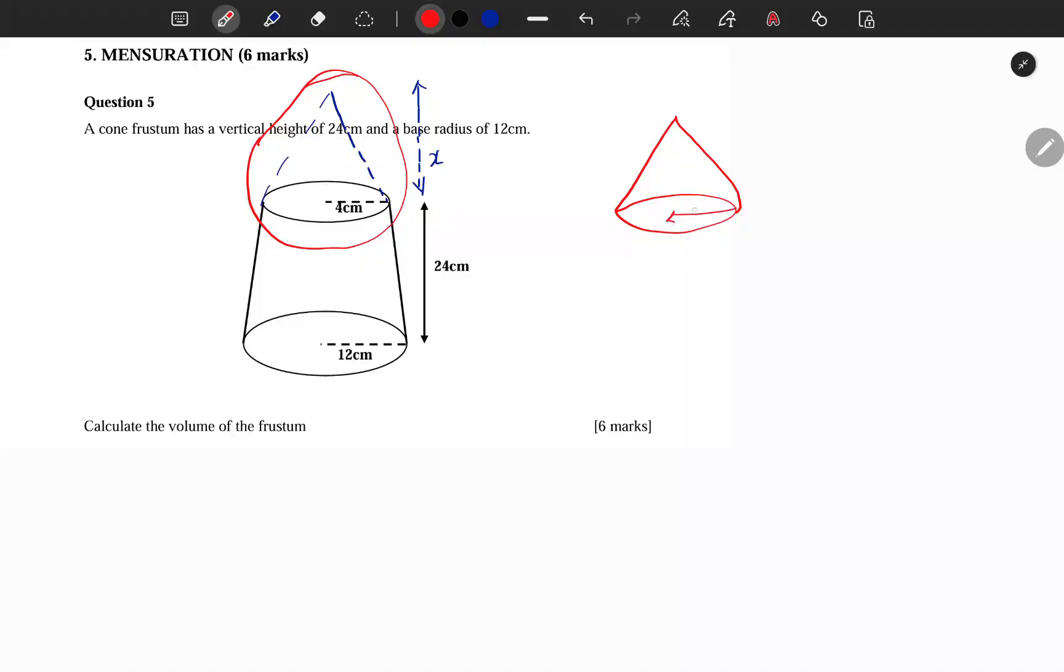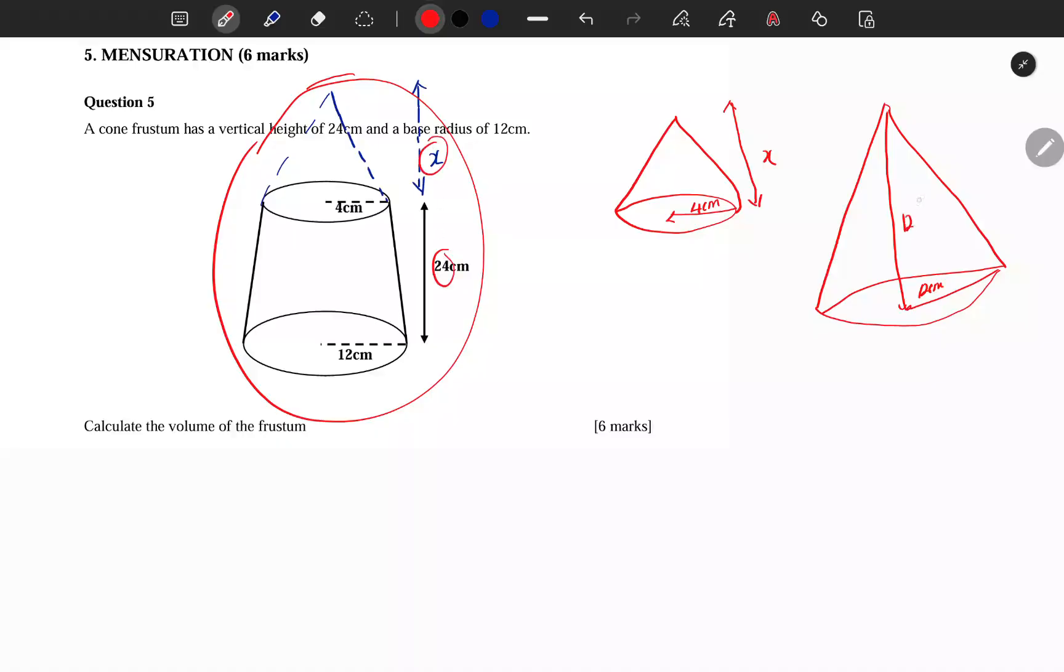Where from there to there is 4 cm and whose height is x. There's also another bigger cone whose base is 12 cm. Now you see the cone from the top to the bottom, whose height is 24 plus x.